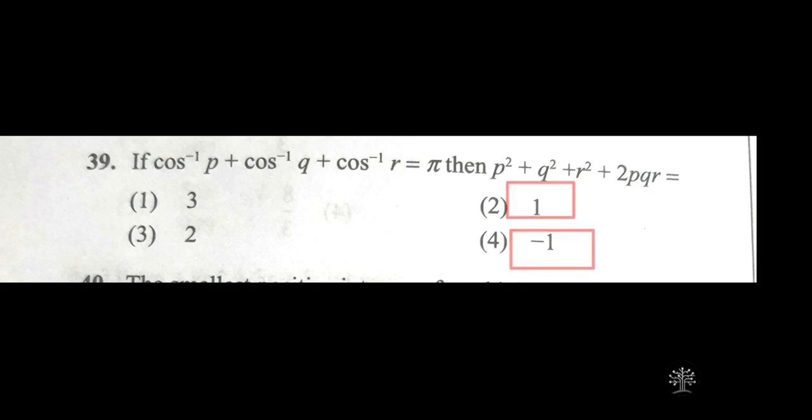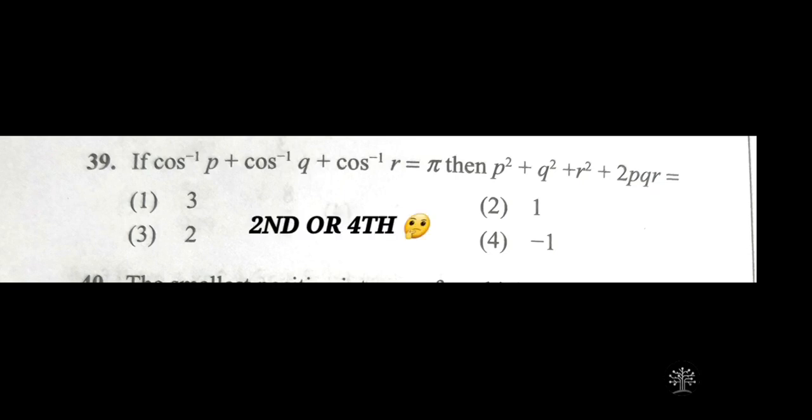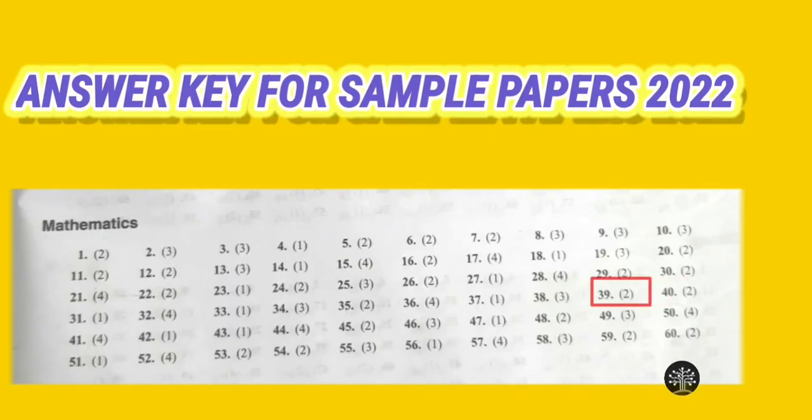For the 39th question, the second and fourth options are similar — one is plus 1 and the other is minus 1. Taking help of other options: the first option is plus 3 and the third option is plus 2. Both supporting options are on the plus side, so we go for the second option (plus 1). The correct answer for question 39 is the second option. We have solved another question using our trick without studying.